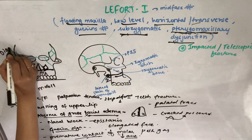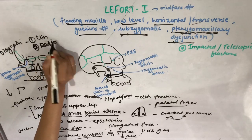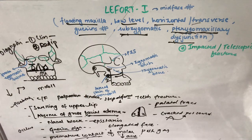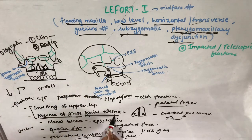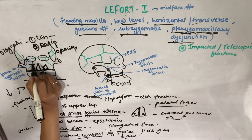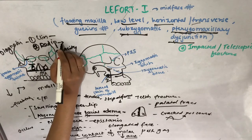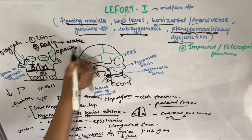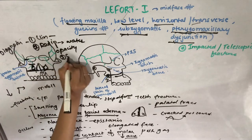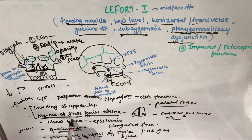Regarding diagnosis: clinically, key differentiating features are mobility at the anterior nasal spine, Guerin's sign, and absence of gross facial edema. Radiographically, there is opacity of the maxillary sinus because it fills with blood. The most important radiograph is Waters' view. CT scan can also be used, as it reveals the fracture line more clearly.